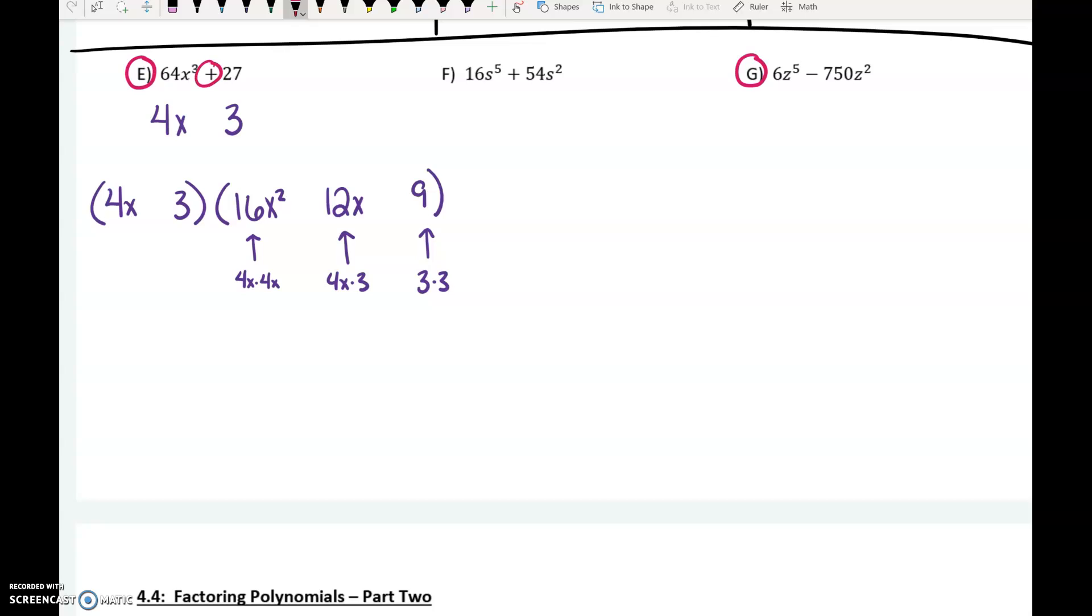So when there's a number in front of that first thing, there's a little bit more work because you have to really make sure that you're squaring that whole thing. We started with plus, so our first symbol is plus. The next symbol is minus. The last symbol is always plus.